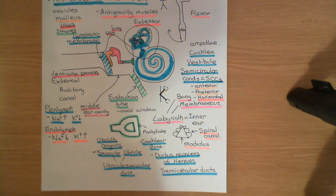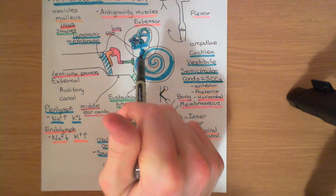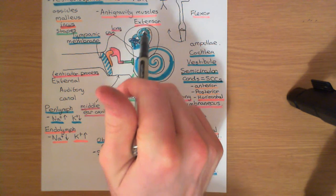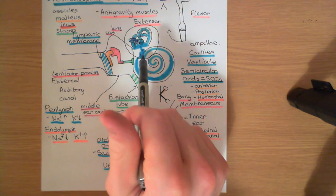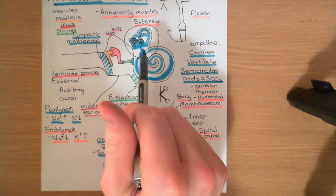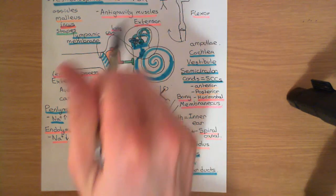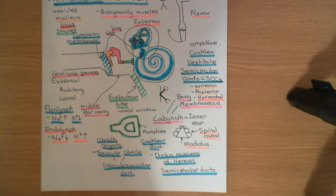That's the first video complete, covering the anatomy of the labyrinth. In the next video, we'll start to look at the sensory apparatus inside the vestibular structures — inside the utricle, saccule, and semicircular ducts.